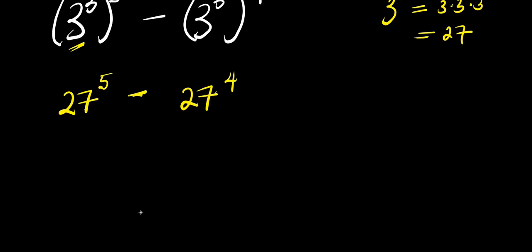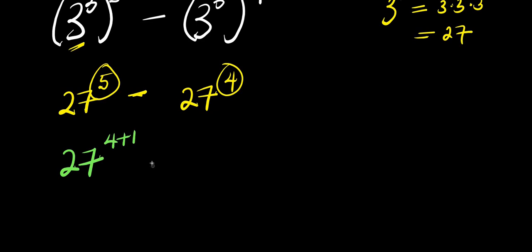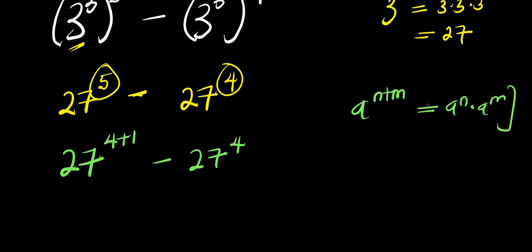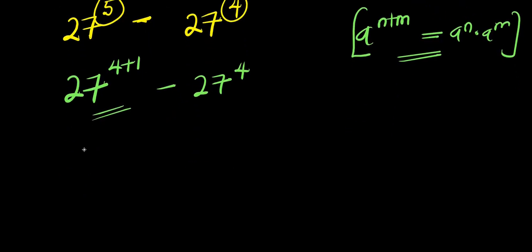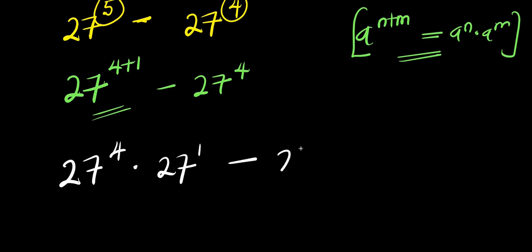So what we can do is to express 5 as summation of 4 and 1, because there is 4 here already. So we have 27 power 4 plus 1 minus 27 power 4. Now if you have a power n plus n, this equals a power n times a power n. Applying this right here, we are going to have 27 power 4 times 27 power 1 minus 27 power 4.